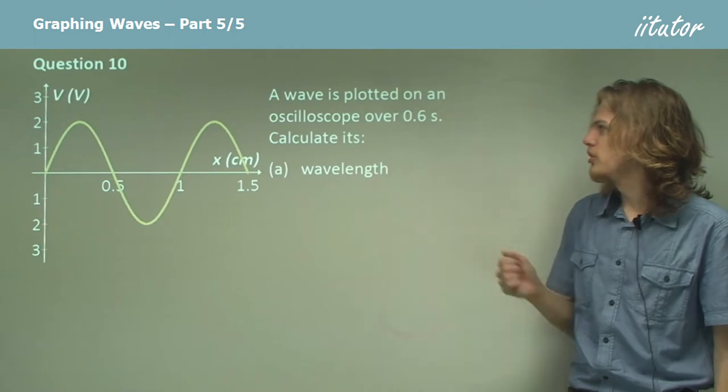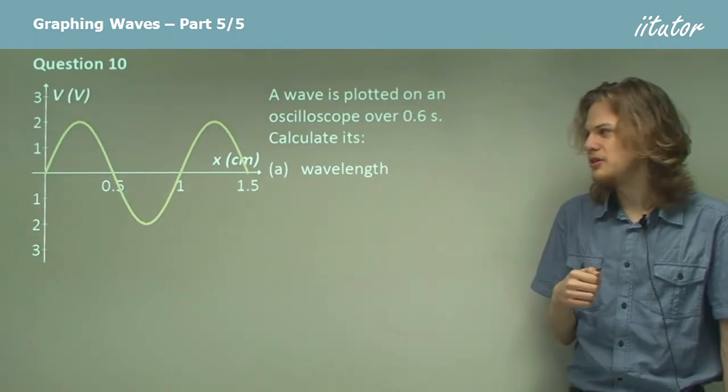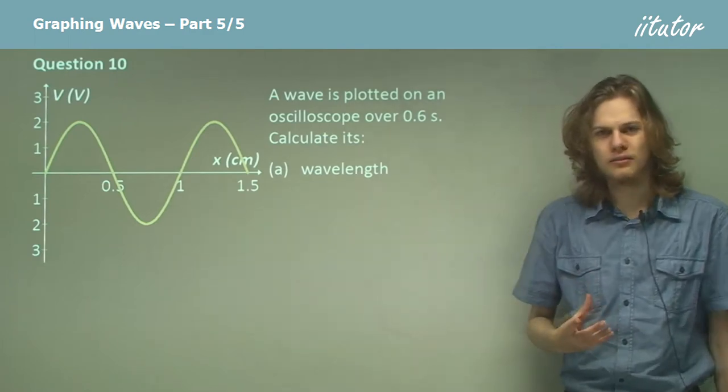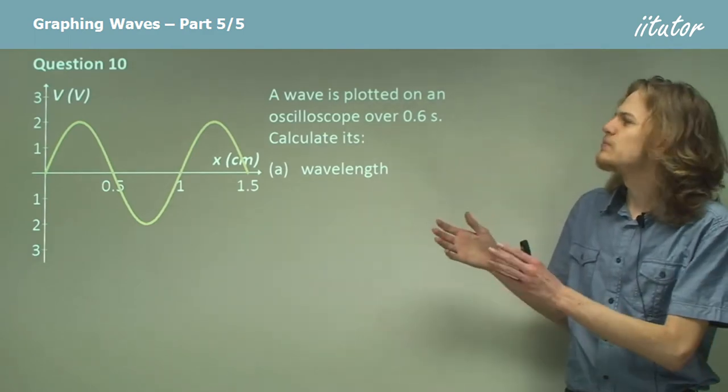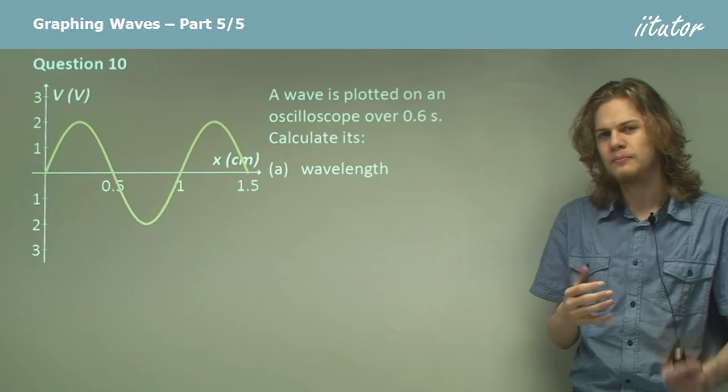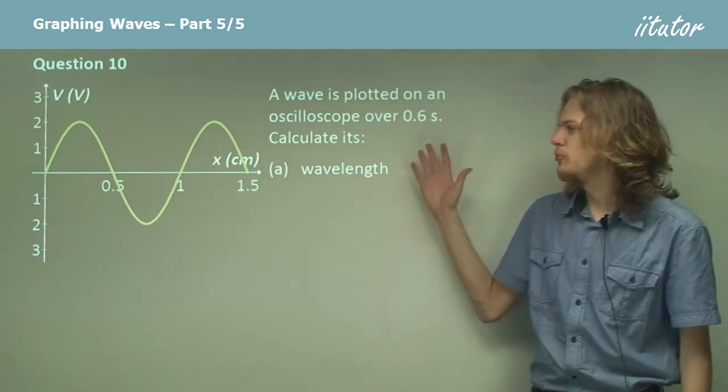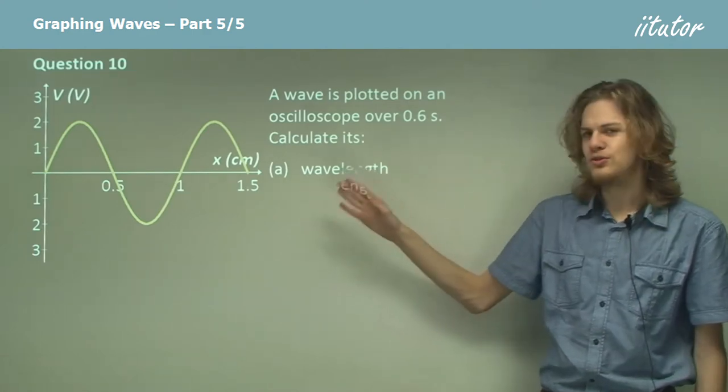A wave is plotted on an oscilloscope over 0.6 seconds and produces a trace looking something like this. Find its wavelength. Now what we're given here is position and voltage, right? So we're looking at a freeze frame after 0.6 seconds and we're given this wave.